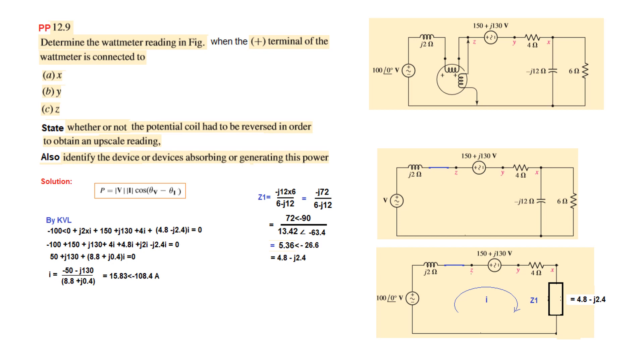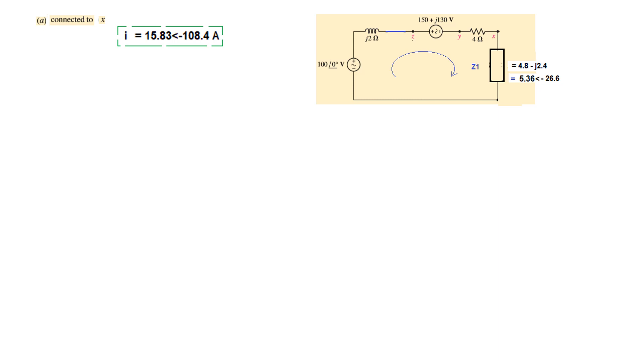Now that we have found current, the first part was to connect the voltmeter to terminal x. This is the circuit we had and we've already calculated the current. Let's draw the circuit. We connect the voltmeter's positive terminal to terminal x. Basically, we need to find the voltage across this impedance. We call this voltage v1. The voltage can be found by current multiplied by z1. Plugging in the values of current and z1 is 4.8 minus j24, and in polar it is 5.36 angle minus 26. So this is the value of voltage v1.